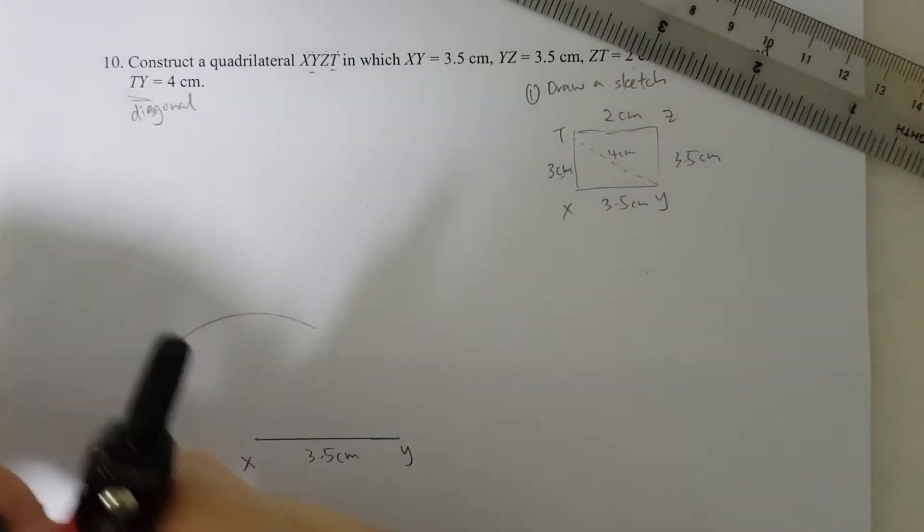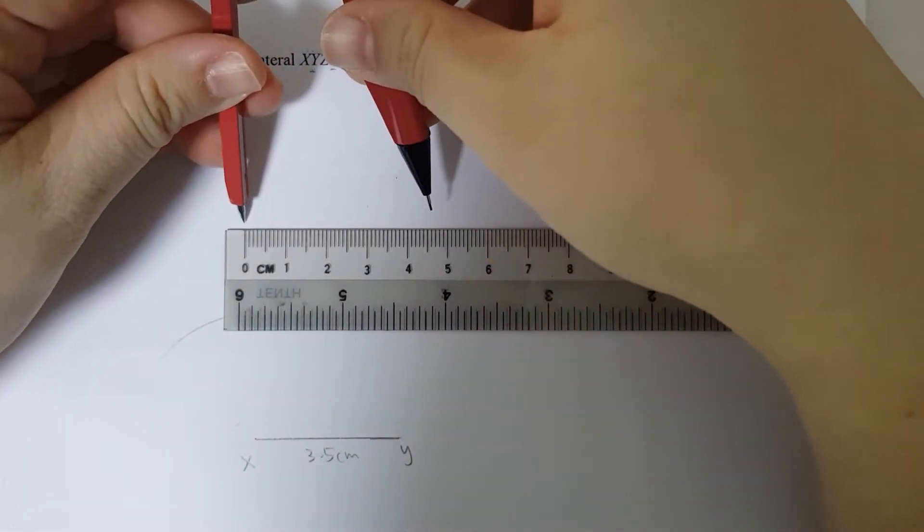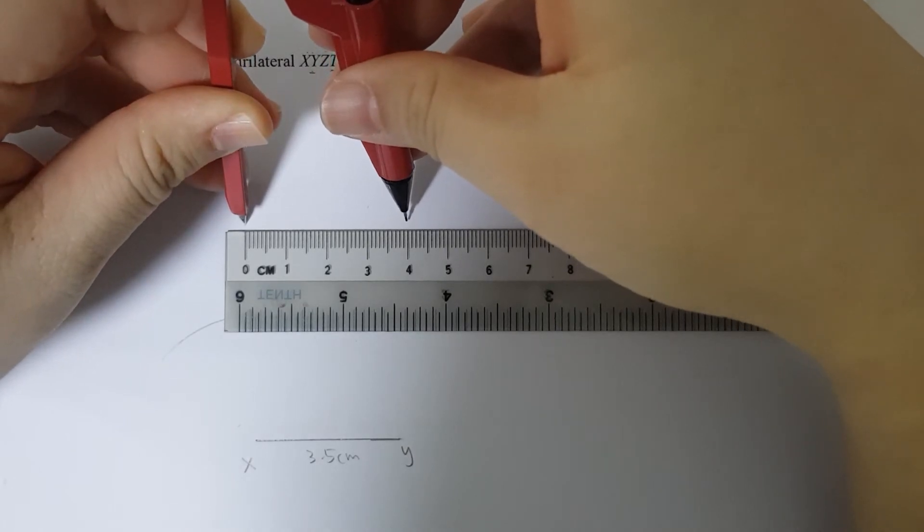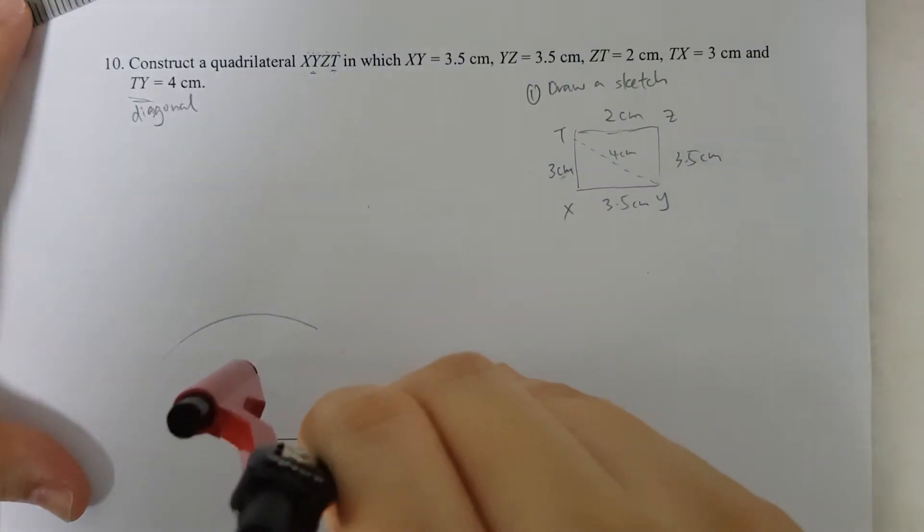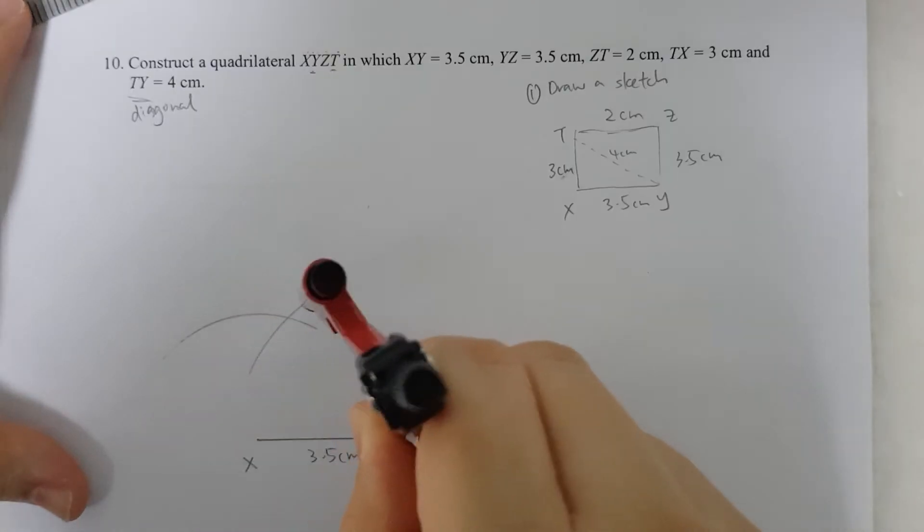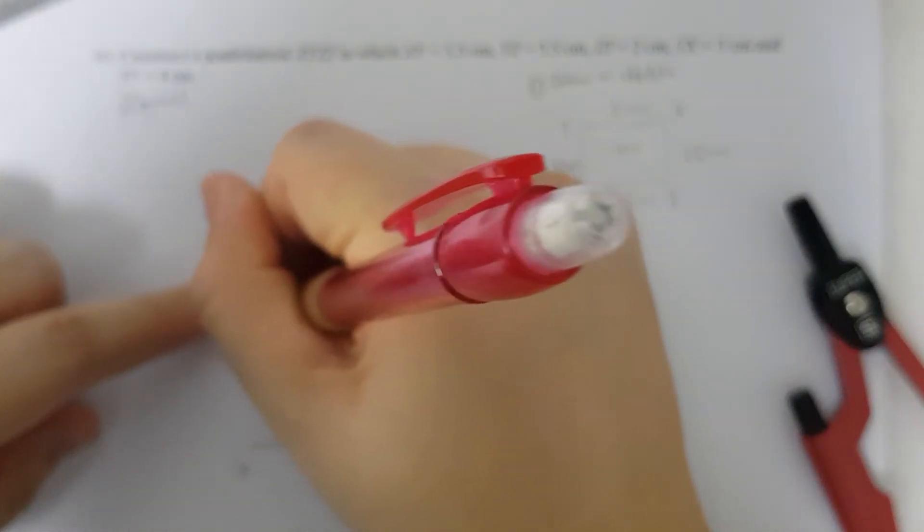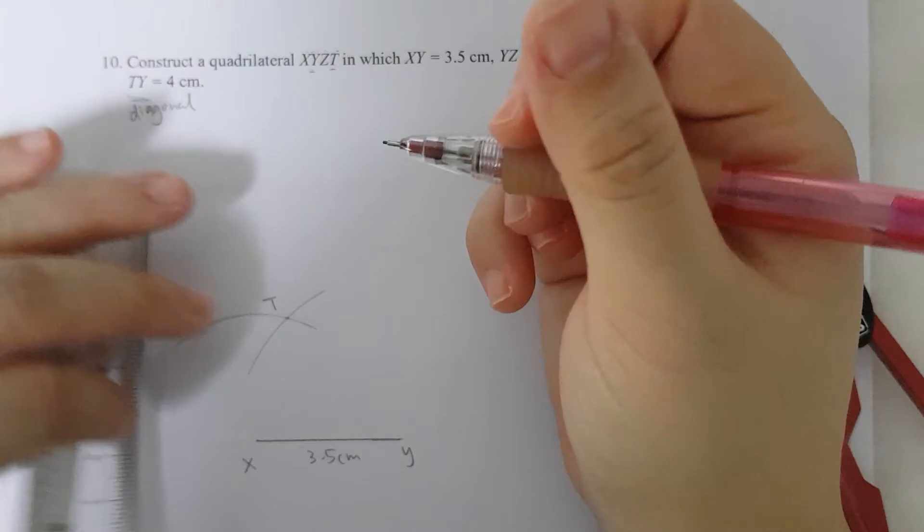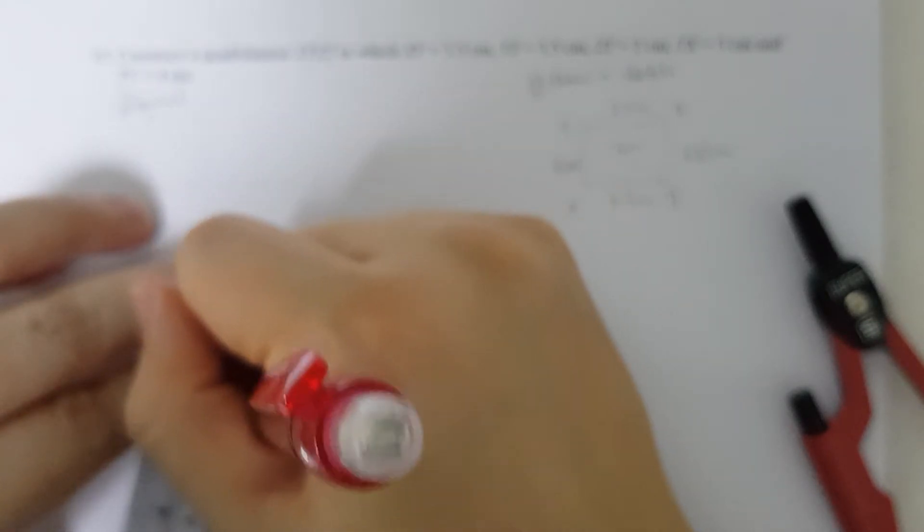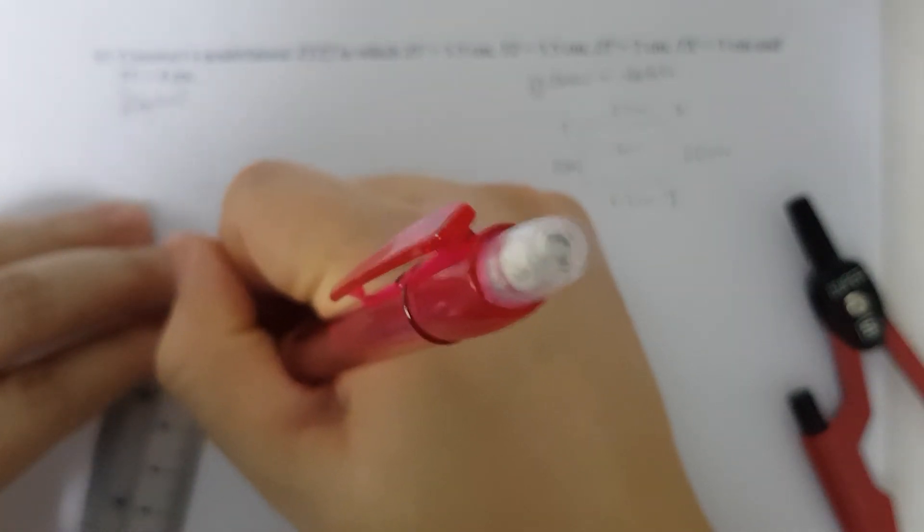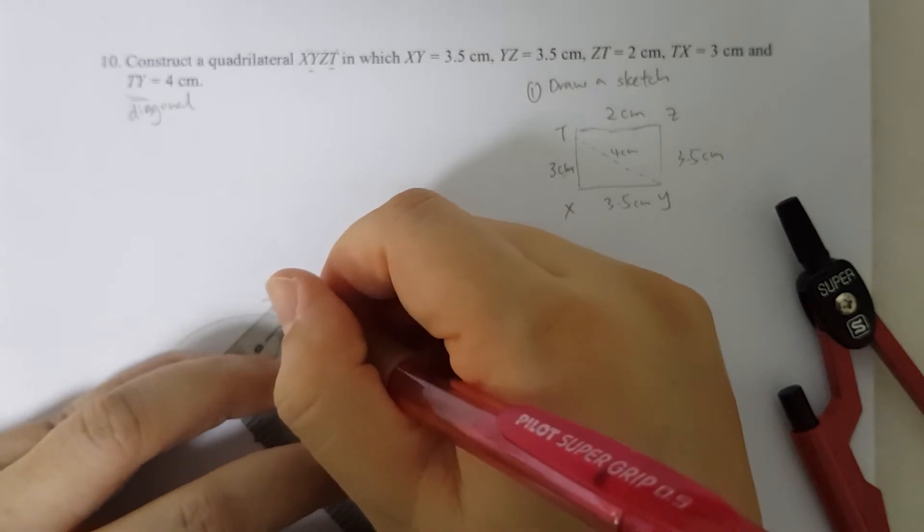Then for TY, since I know it's 4cm, I'm going to use my ruler and my compass. 4cm. And put the metal tip at Y, and then draw the arc. Now these two arcs intersect to give me T. So I know that my point T is here. I will label point T, and I can actually draw TX which is 3cm, and TY.